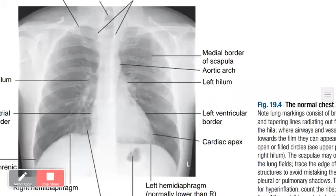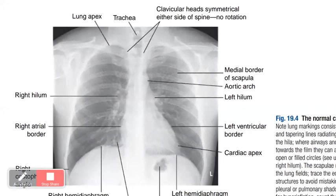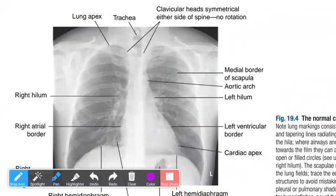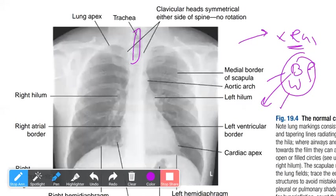In an X-ray, white represents soft tissue and black represents air. Let's start from the trachea, which appears central. We can identify the right and left borders of the heart, the right and left hemi-diaphragms, and the ribs on both sides.